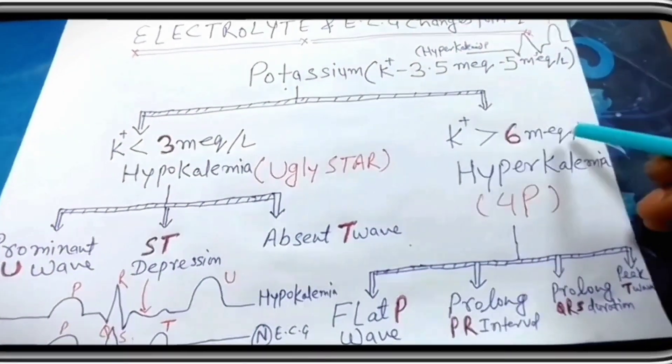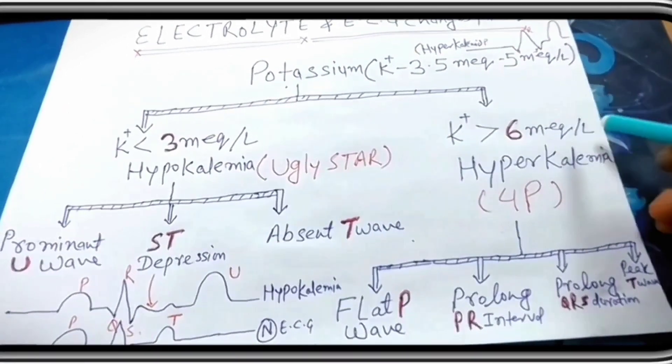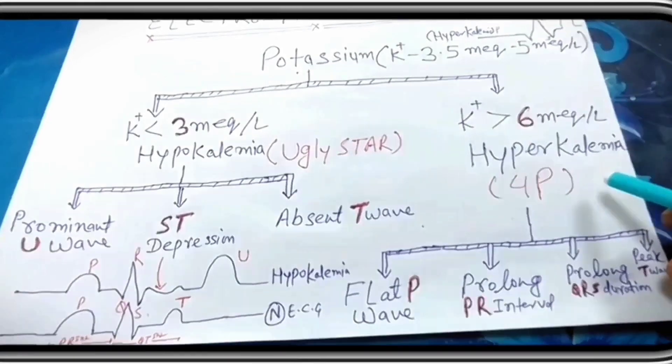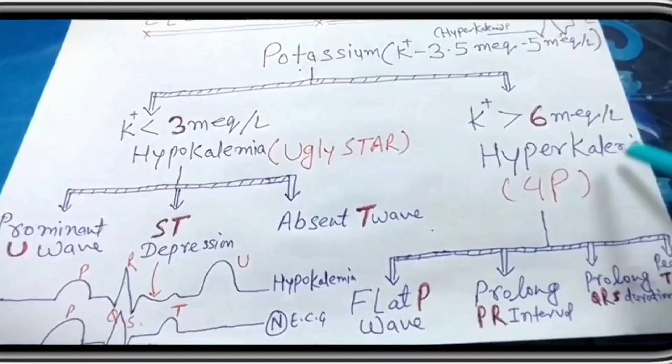Now we come to when potassium level is more than 6 milliequivalent per liter. The condition is called hyperkalemia. How we remember the condition of hyperkalemia by 4P.